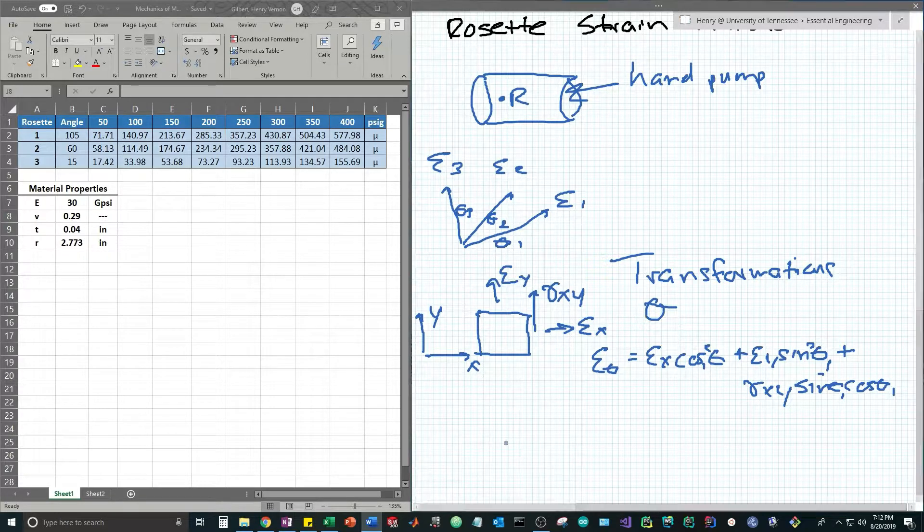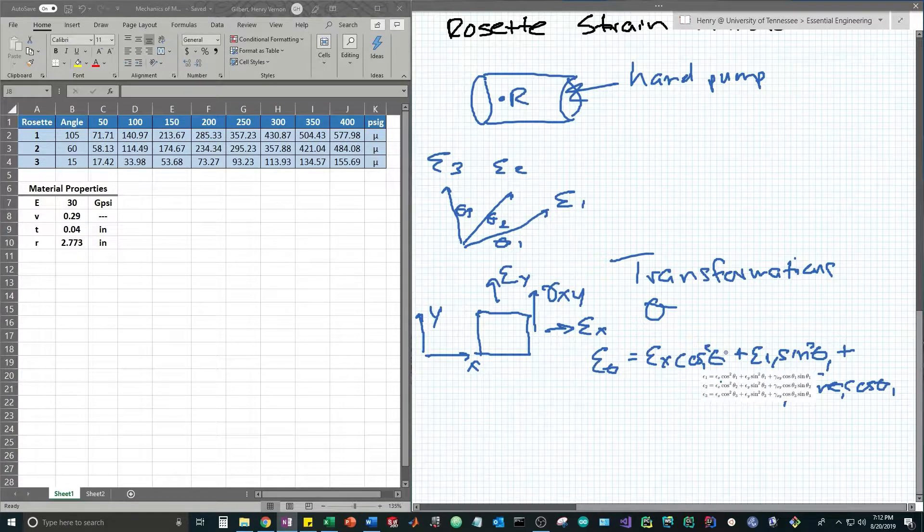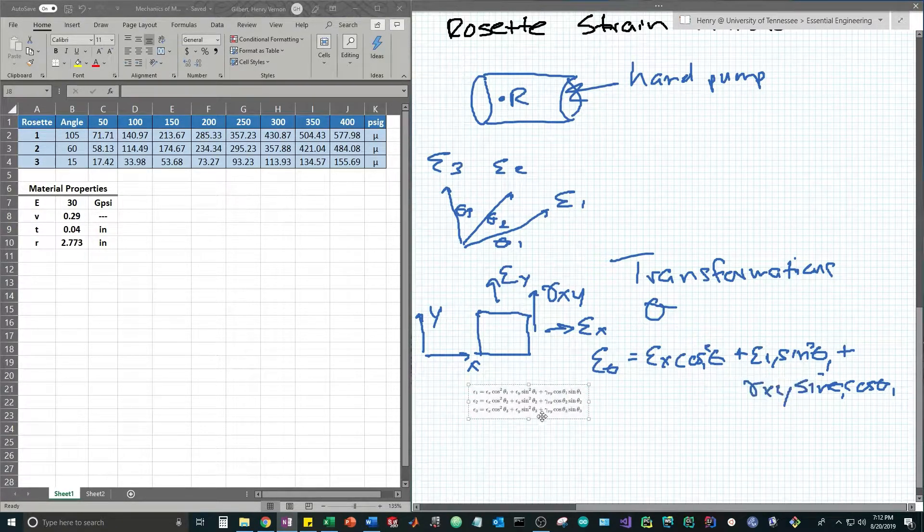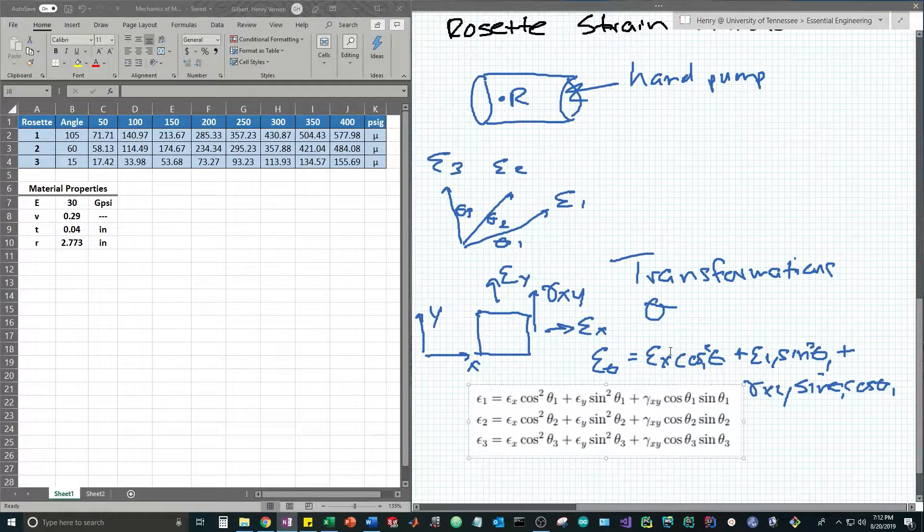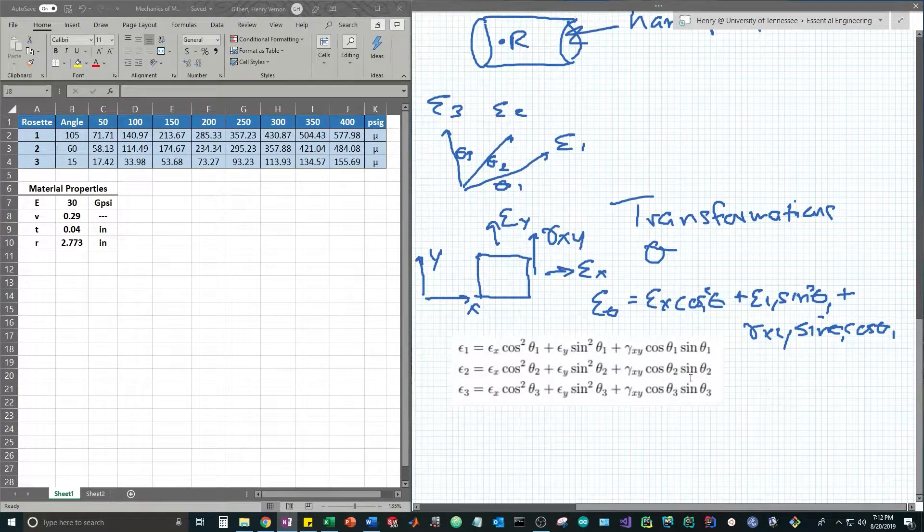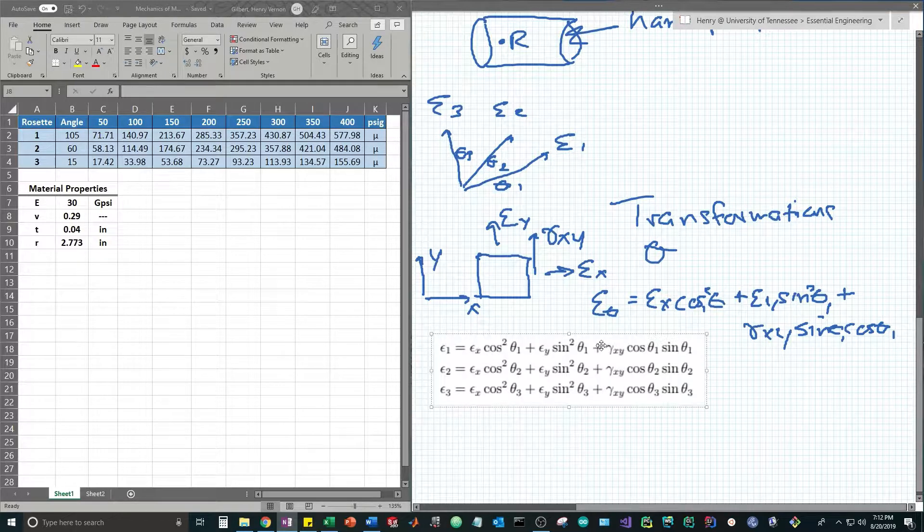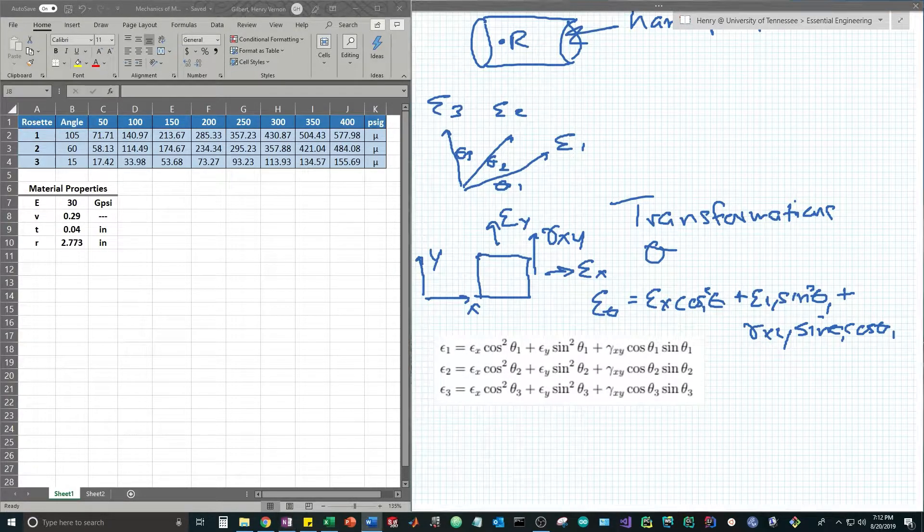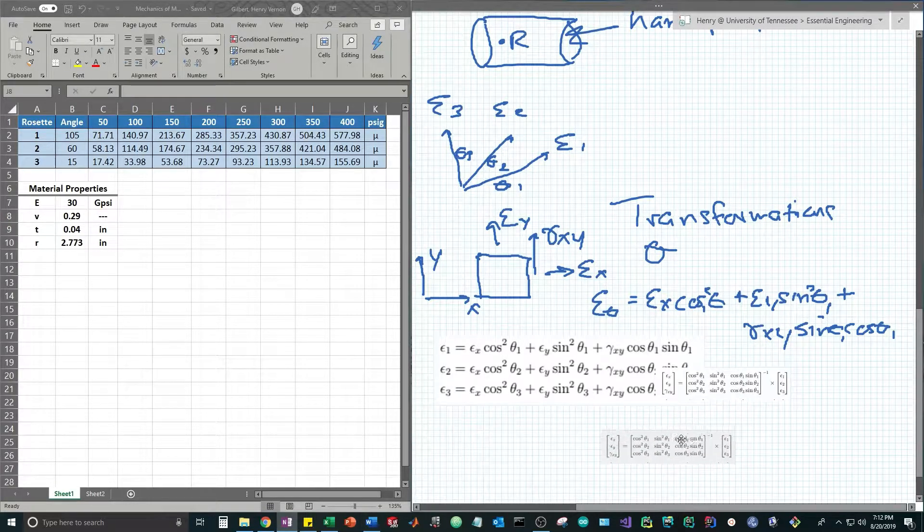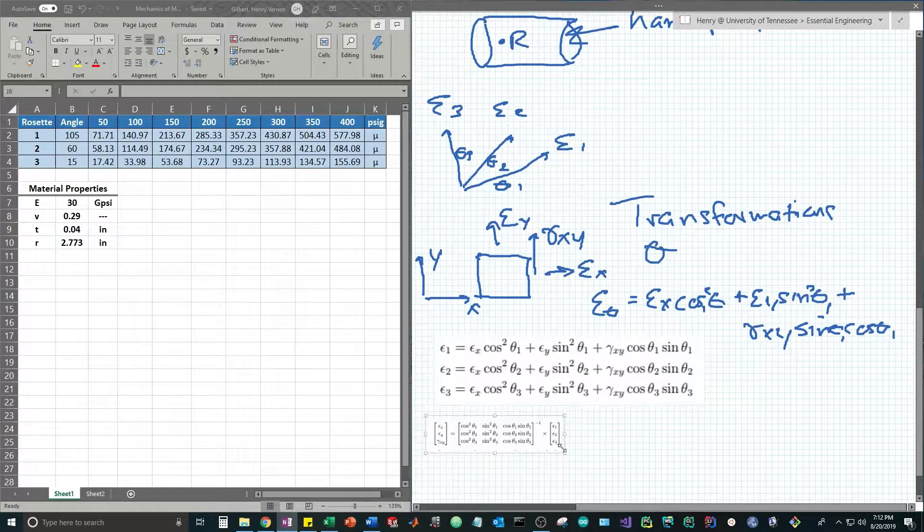That is done by setting up a system of equations which I have written out here, giving us three equations with three unknowns. We can convert this into matrix form to allow us to solve for the normal strains.